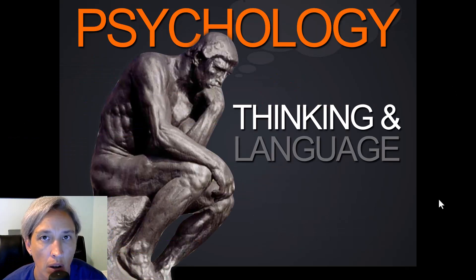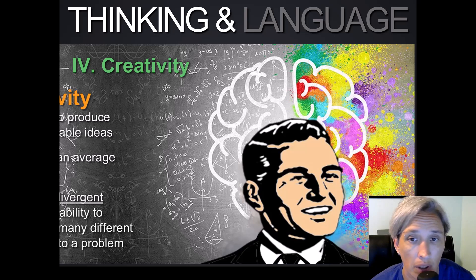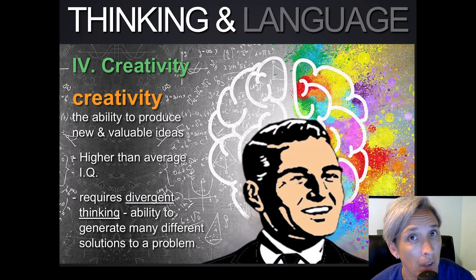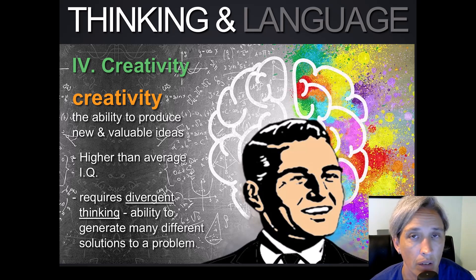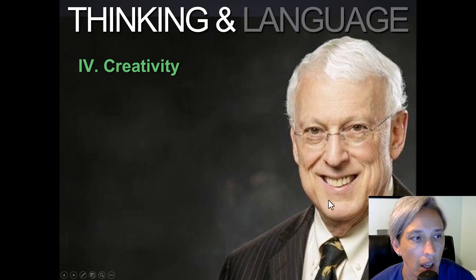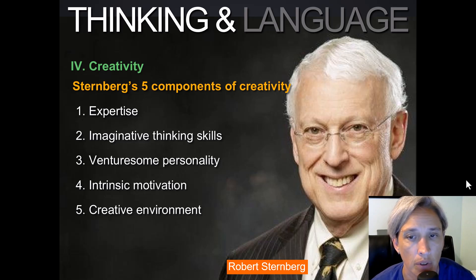Let's talk about creativity and the ways that we are actually successful when it comes to solving problems. Creativity is the ability to produce new and valuable ideas. It may take a higher IQ to be really creative, but average people can be creative too. Thinking creatively requires divergent thinking, which is the ability to generate many different solutions to a problem. Divergent thinking can depend upon five components according to Robert Sternberg: expertise, imaginative thinking skills, venturesome personality, intrinsic motivation, and creative environment.